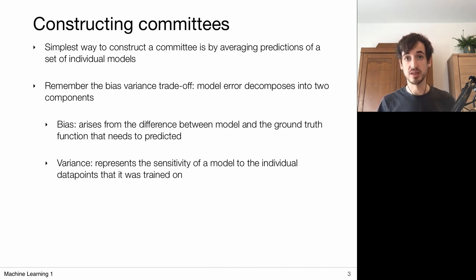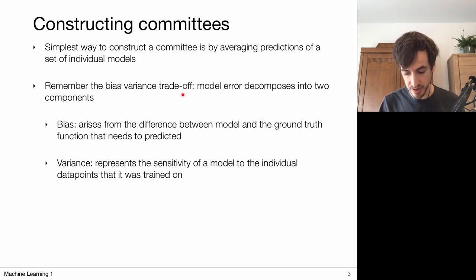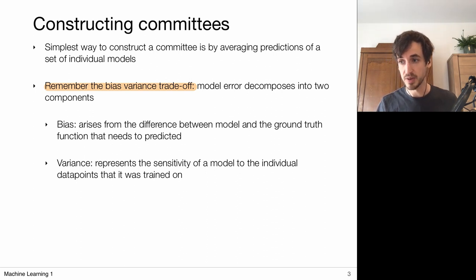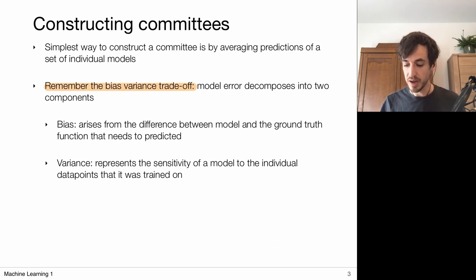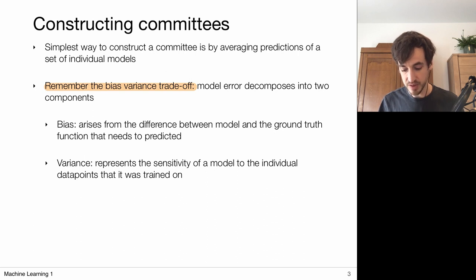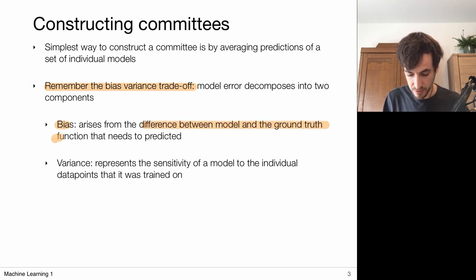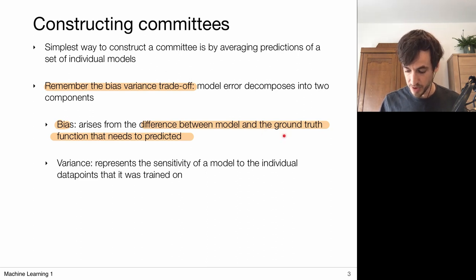One way of training different models is simply by picking different datasets, and for every new dataset I'm going to train a new model. That was essentially what we did when we talked about the bias-variance trade-off. The dataset is a random variable in itself, so I can have a process that generates new datasets. Every time I observe a dataset, I train a model with a certain performance. We can talk about an expected error over newly sampled datasets, and this error decomposes into a bias, which essentially explains the difference between each trained model and the ground-truth function.